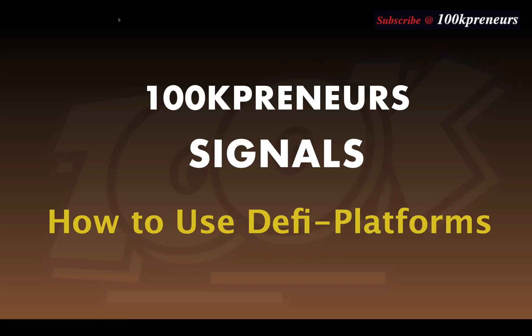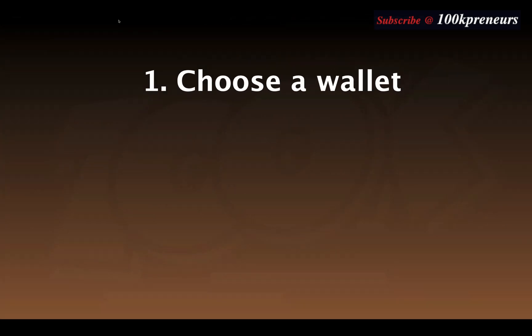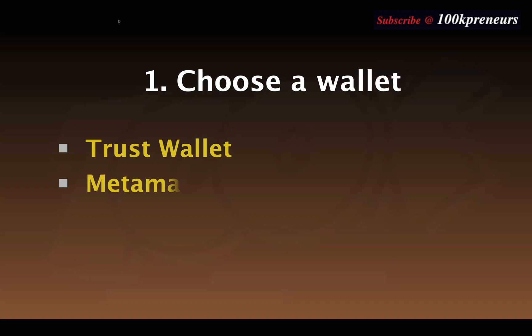In this video we are going to look at how to buy and sell tokens on DeFi platforms — another name for this is swapping. The first step is to choose a compatible wallet. There are different wallets; the two most popular include Trust Wallet and MetaMask. Both are available in your phone app store. I use Trust Wallet on my phone and MetaMask on PC.